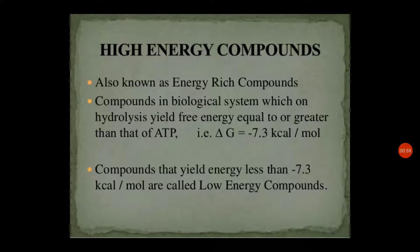The criteria for considering a compound as a high energy compound is that it should yield energy on hydrolysis which is equal to or greater than ATP, that is it should yield an energy which is greater than or equal to minus 7.3 kilocalorie per mole. The energy produced by hydrolysis of ATP is equal to minus 7.3 kilocalorie per mole. Compounds which yield energy less than minus 7.3 kilocalorie per mole are known as low energy compounds.